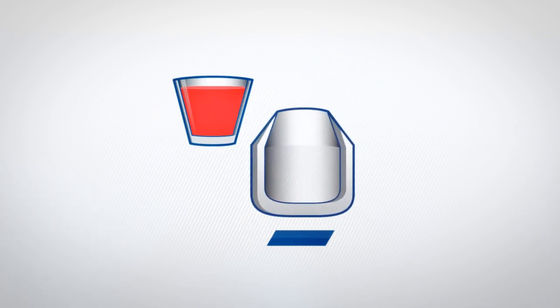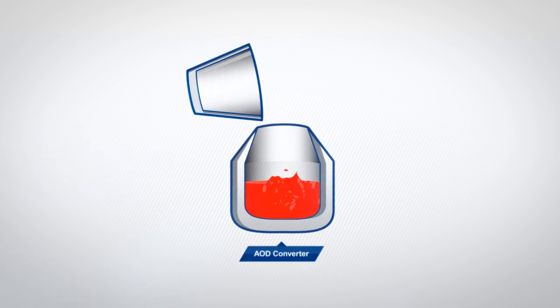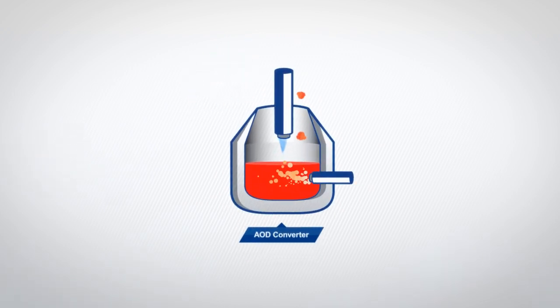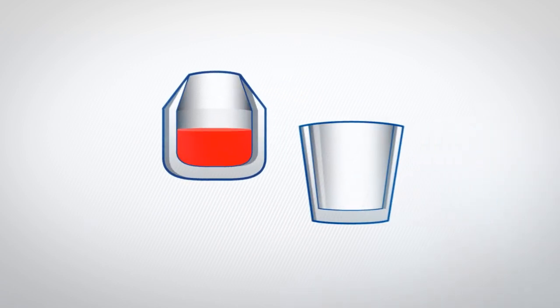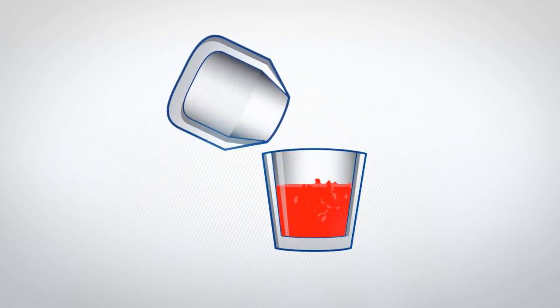In the AOD converter, carbon and sulphur are removed and the alloying is made to create the specified stainless steel grade. The melt is poured into a ladle and transferred to the ladle treatment where final adjustments are made before casting.